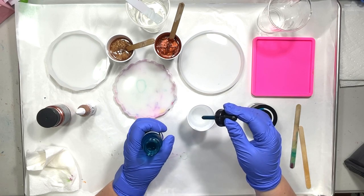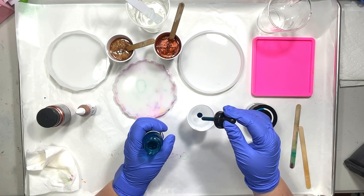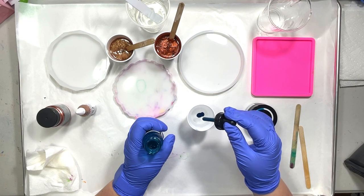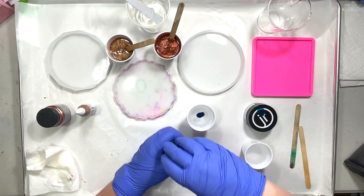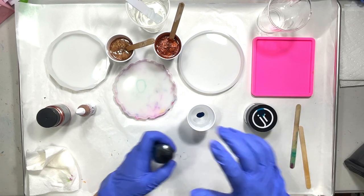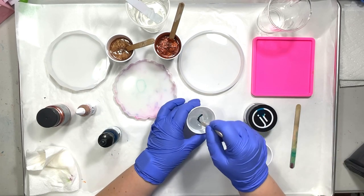I'm going to do five drops to start of this turquoise deep. So I want this to be a dark color, but it is going to remain transparent.